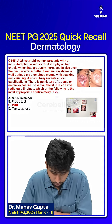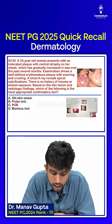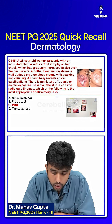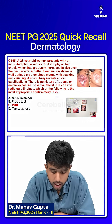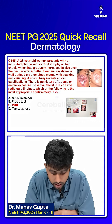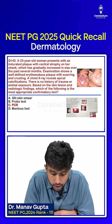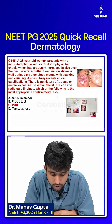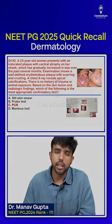A 23-year-old woman presents with an indurated plaque with central atrophy on her cheek, which has gradually increased in size over the past several months. Examination shows a well-defined erythematous plaque with scarring and crusting. The X-ray reveals apical calcifications. There is no history of trauma or animal exposure. Based on the skin lesion and radiological findings, the most appropriate confirmatory test is option C, PCR.